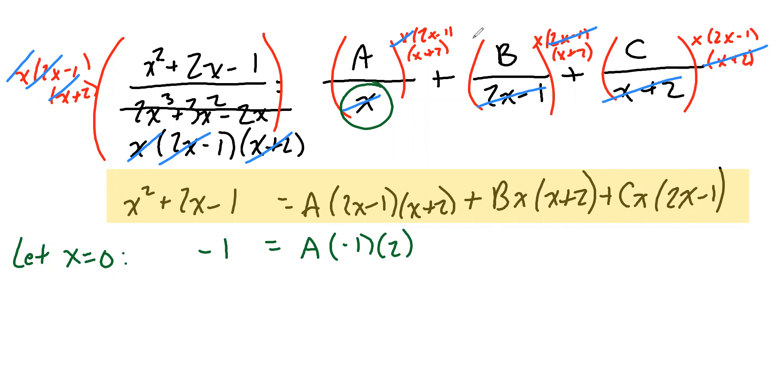And now we've got an equation that we can solve for A. This implies that negative one equals negative two A. And this implies that A equals one-half. We now know the first unknown numerator.